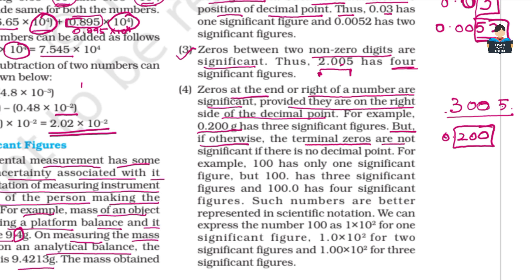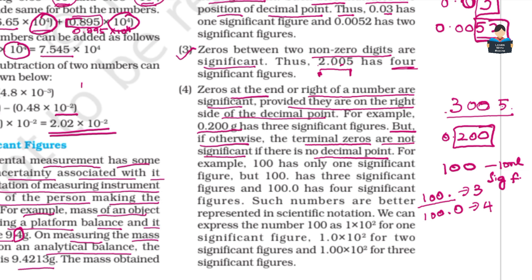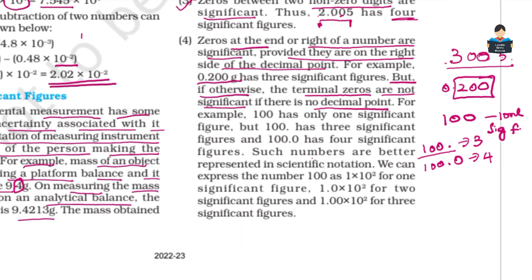However, the terminal zeros are not significant if there is no decimal point. For example, 100 has only one significant figure, but 100. (with decimal point) has three significant figures. Such numbers are better represented in scientific notation.